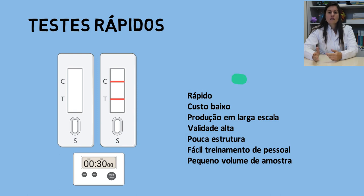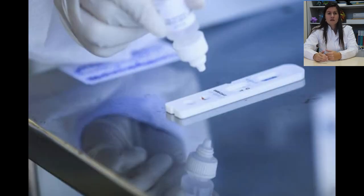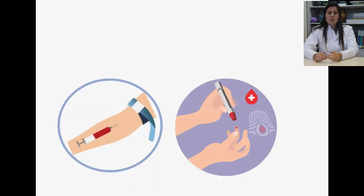A não necessidade de grande estrutura laboratorial e nem de profissionais extremamente especializados para sua execução. Além disso, também utilizam pequenos volumes de amostra. Os testes rápidos são primariamente recomendados para testagens presenciais, apesar de poderem ser feitos em laboratório posteriormente à coleta da amostra. Podem ser feitos com amostra de sangue total, obtida por punção venosa ou da própria polpa digital.